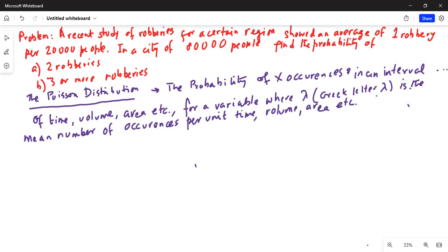Is given by p of X with lambda is the mean number of occurrences per unit time, volume, area, etc., is equal to e to the minus lambda, multiplied by lambda to the power of X divided by X factorial.